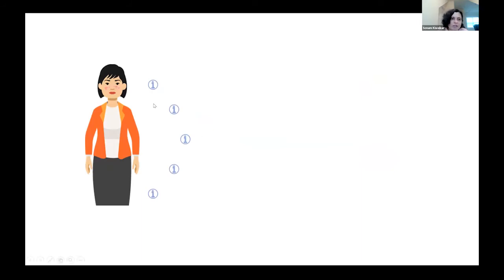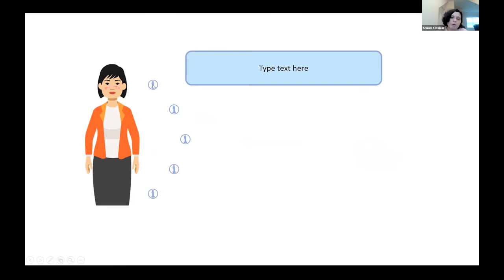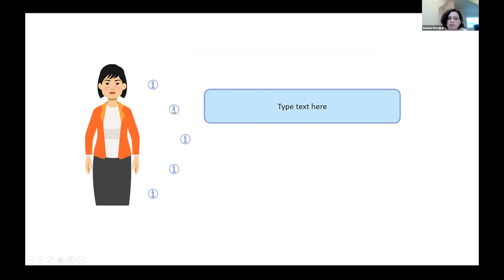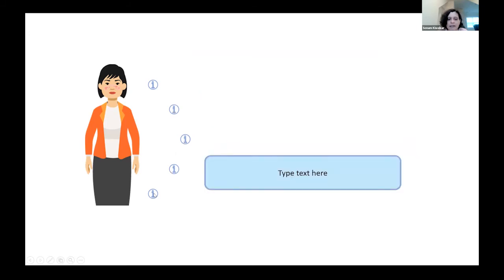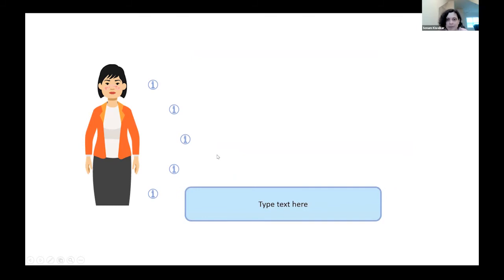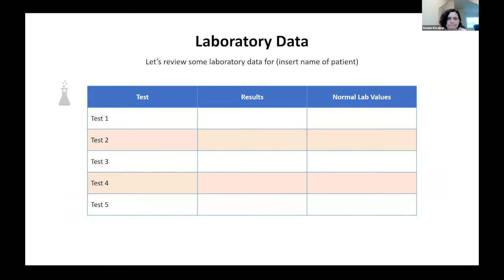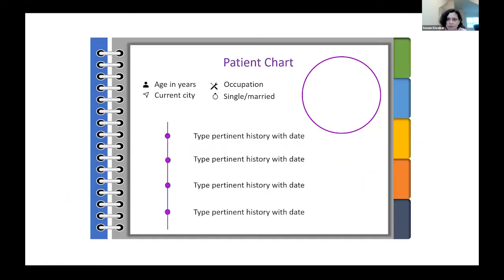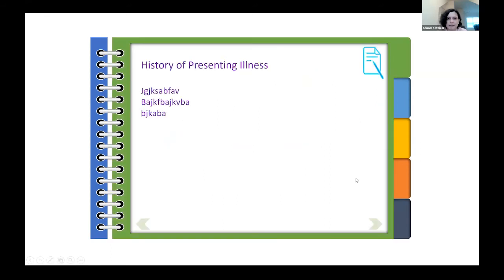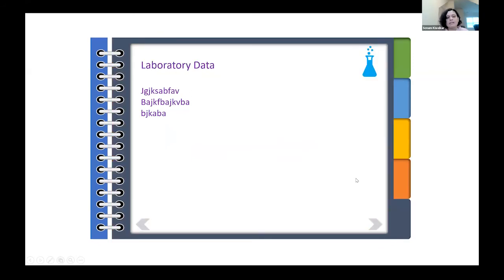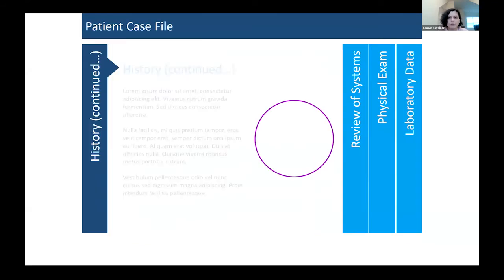For physical examination, there is an avatar with clickable areas revealing findings for head and neck, chest, abdomen, musculoskeletal, and lower extremity regions. For laboratory data, templates are available in different display formats. For history and physical, you can use a bullet-point style template or a patient file format.